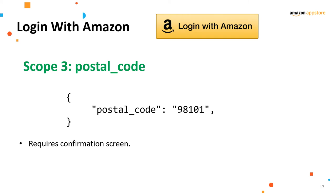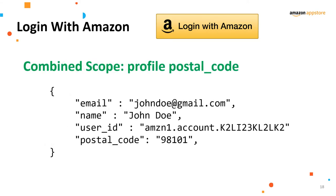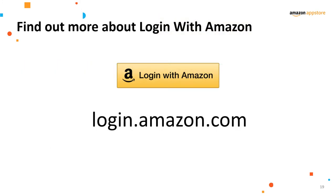The third scope is Postal Code, where the customer shares only their postcode. Since the postcode is a personal identifier, it also requires a confirmation screen. If you require all of this information, you can combine the scopes — for example, Profile Postal Code — which retrieves the email, name, user ID, and postcode together. If you want to know more about Login with Amazon, visit login.amazon.com, where you can find all the documentation. Login with Amazon supports most mobile platforms and is also available for web.